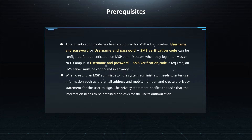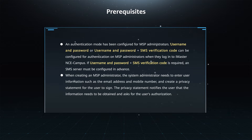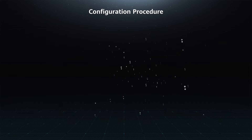When creating an MSP administrator, the system administrator needs to enter user information, such as the email address and mobile number, and create a Privacy Statement for the user to sign. The Privacy Statement notifies the user that the information needs to be obtained and asks for the user's authorization.